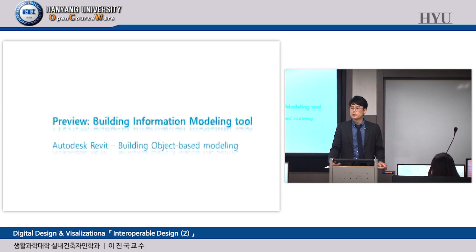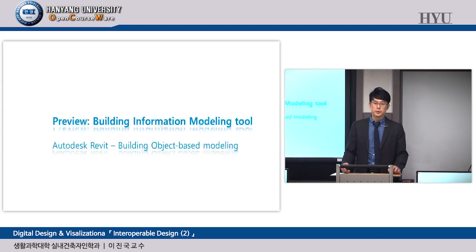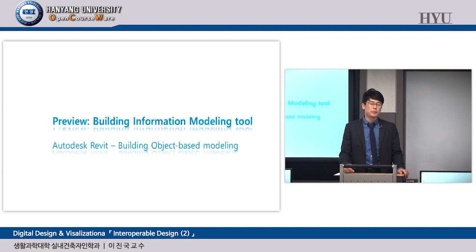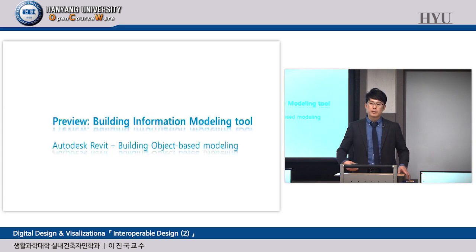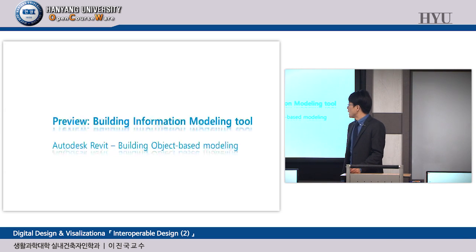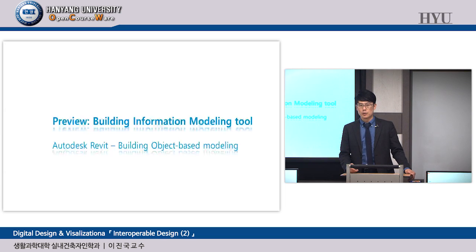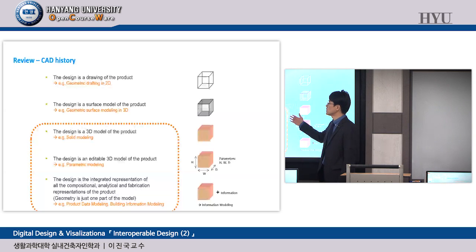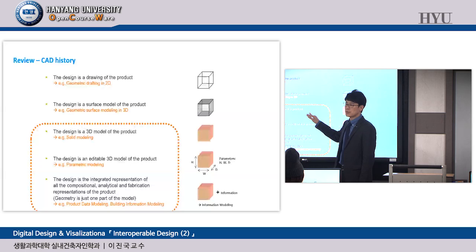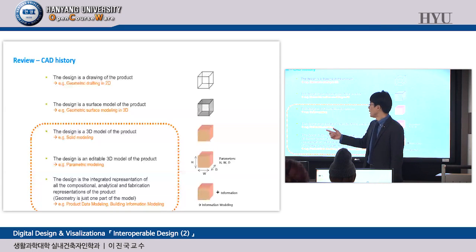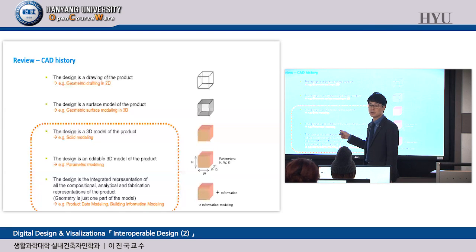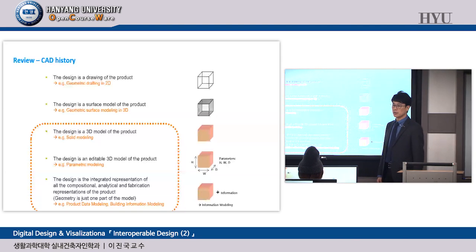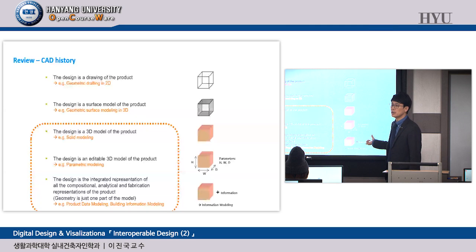Building Information Modeling (BIM) review: BIM is building object-based modeling, not geometric modeling. Based on CAD history, BIM uses solid 3D, not surface-based 3D, and it is parametric design-based. The main subject of Revit is buildings. In the Revit interface there are no lines, polygons, or vertices — instead, the universe is buildings and their sub-components: columns, roofs, windows, doors, and walls.